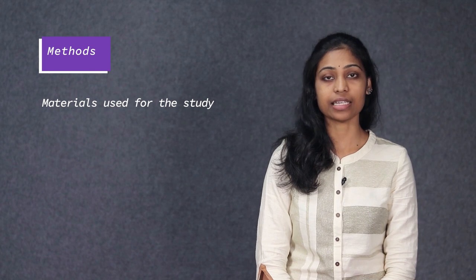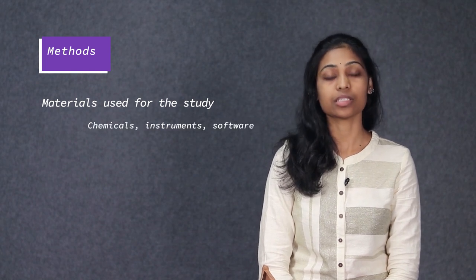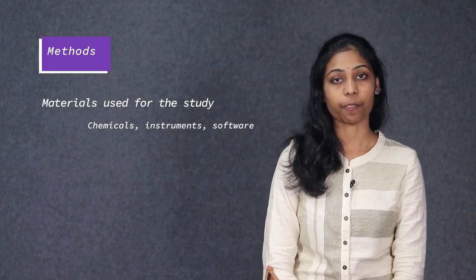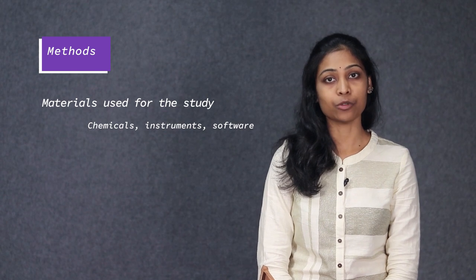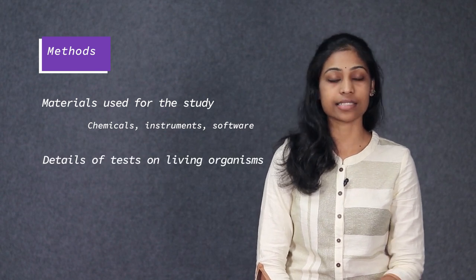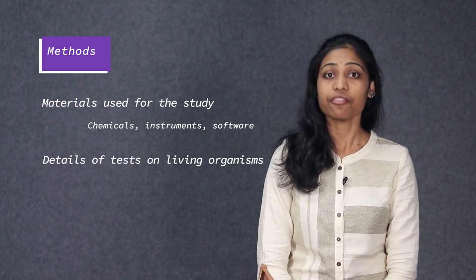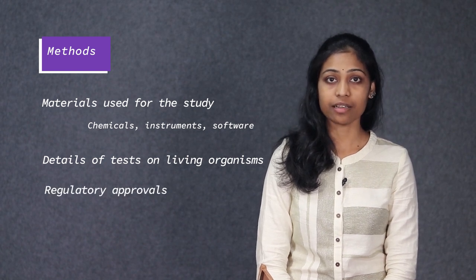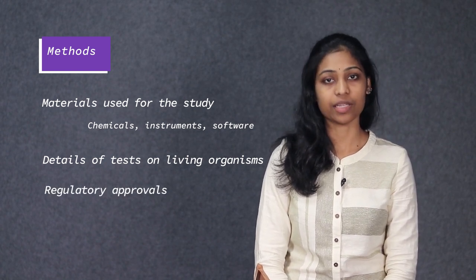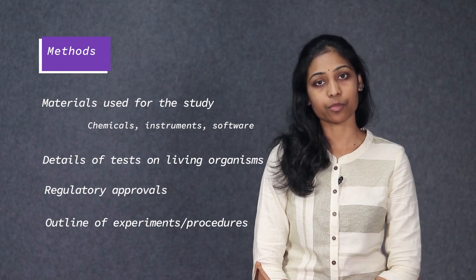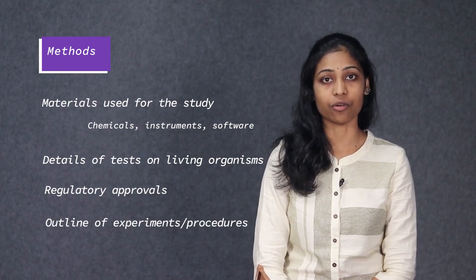Under methods, describe the materials used for the study like chemicals, instruments, software, etc. If living organisms are used, mention their details and the tests conducted. Give details of permissions obtained from regulatory bodies if applicable, and give a brief outline of the procedures of the experiments carried out.